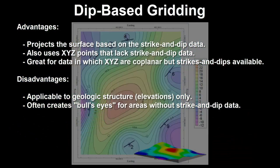Advantages? Dip-based gridding projects the surface based on the strike and dip data. It also uses the XYZ points that lack strike and dip data. And it's great for data in which XYZ are coplanar but strikes and dips are available.